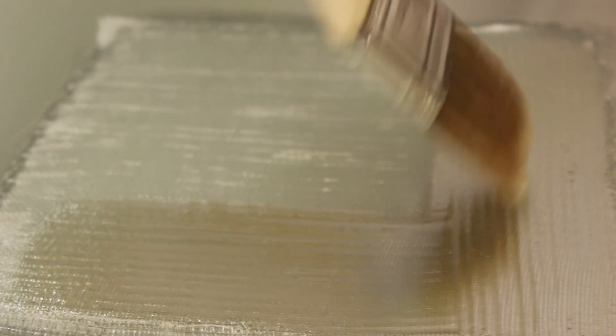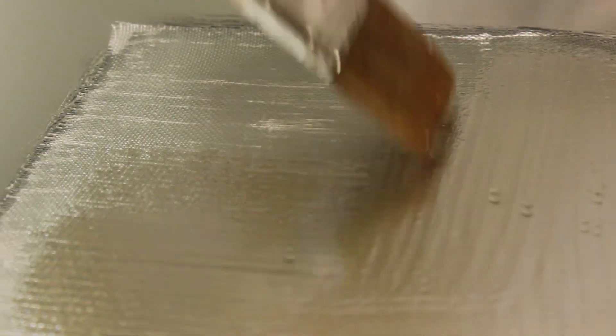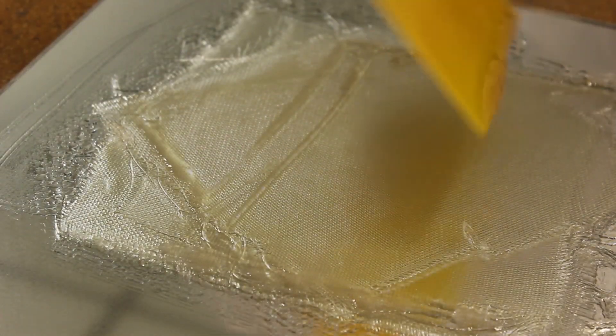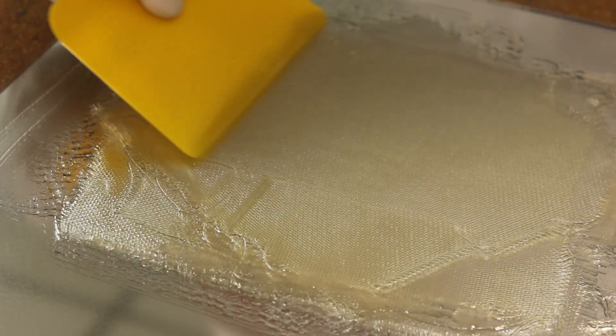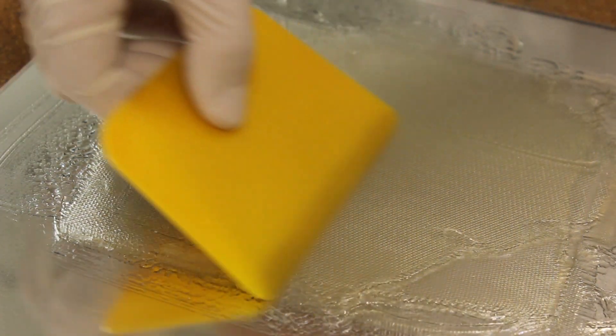When combined, the two bond chemically to form hard composite laminate parts. All of the fiberglass reinforcements available on our website are made to be used with a resin in this way.